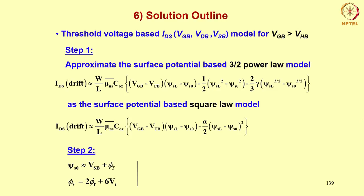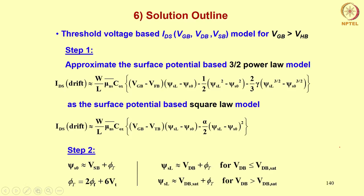In step 2, we will replace ψs0 by its saturation value Vsb plus φt of the surface potential, where φt is twice φf plus 6Vt. We will replace ψsL by Vdb plus φt for Vdb less than Vdb_sat, and by Vdb_sat plus φt for Vdb greater than Vdb_sat. That would be our square law model.